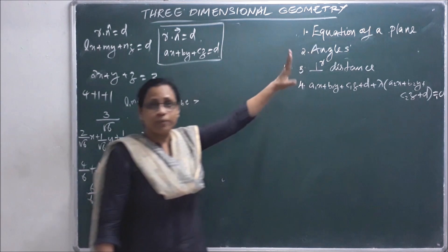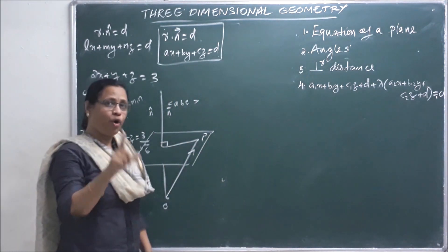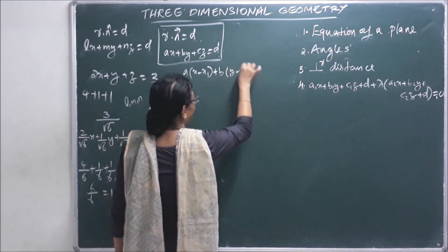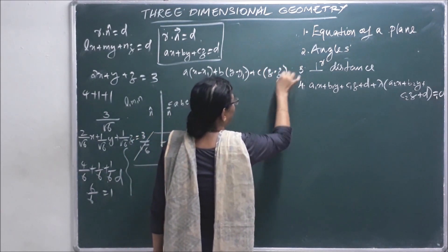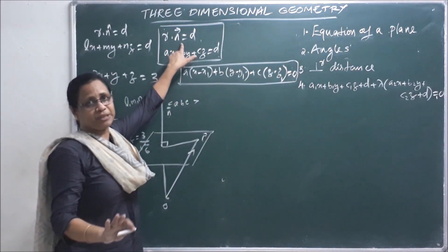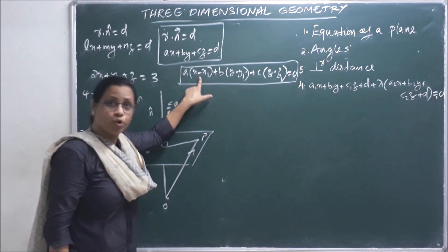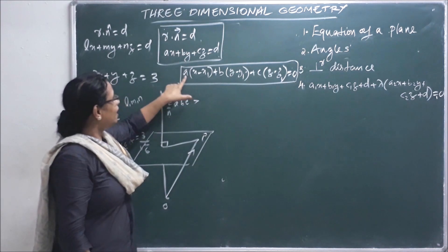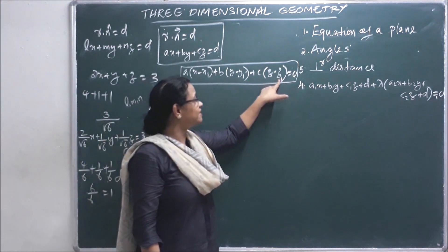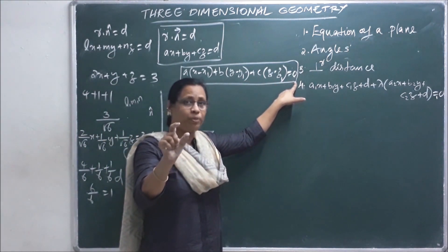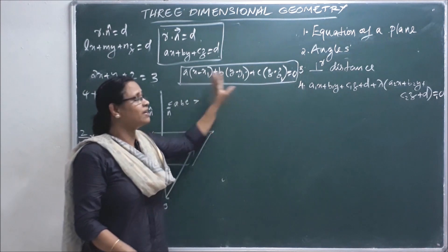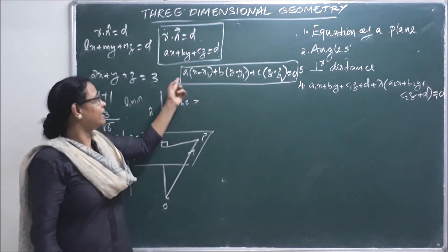If we are given one point on the plane, we can write the equation as A(x minus x₁) plus B(y minus y₁) plus C(z minus z₁) equal to 0. This is the Cartesian form. This equation uses one point and the direction ratio of the normal to define the plane.